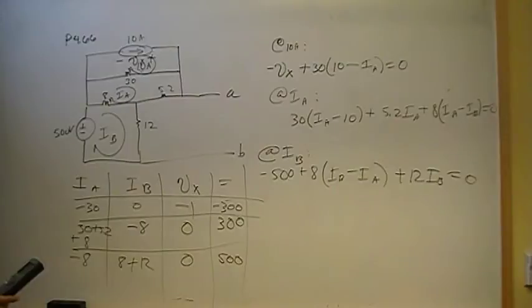30 plus 5.2 plus 8. And then we got negative 8, zero, and 300. And then negative 8, 8 plus 12, zero, and 500.